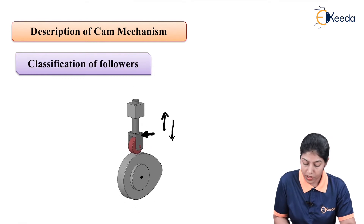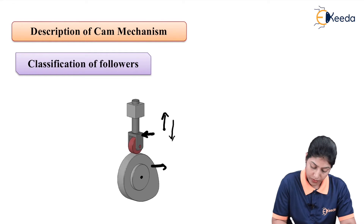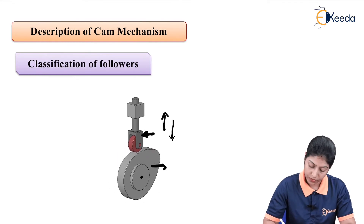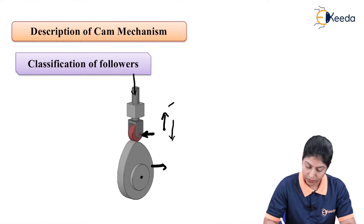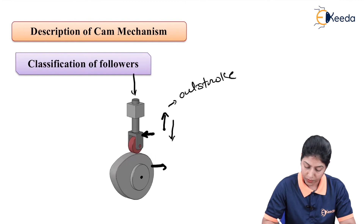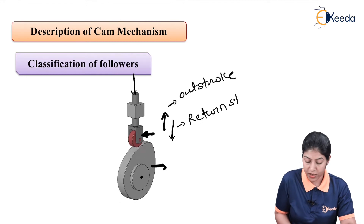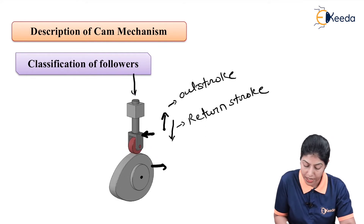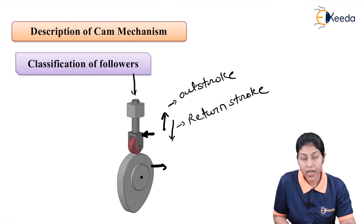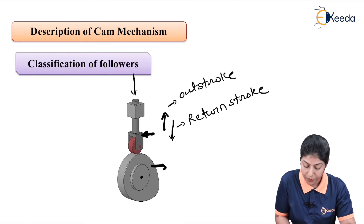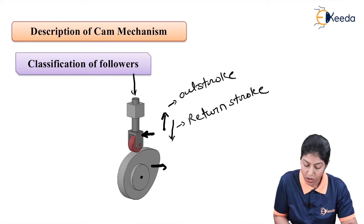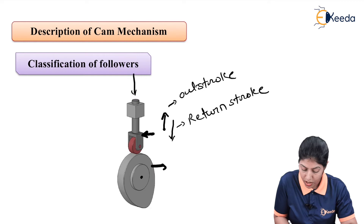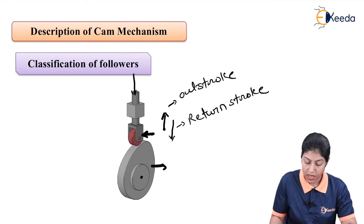Here we have the rotating part as the cam, and the part which is reciprocating up and down is called the follower. There are two movements for the follower — upward direction and downward direction — and this motion depends on the shape of the cam. The shape of the cam is not circular, so as per the shape of the cam we can define the upward and downward motion of the follower. This is the cam and follower mechanism.